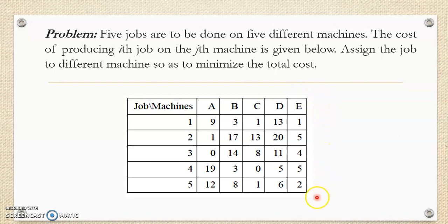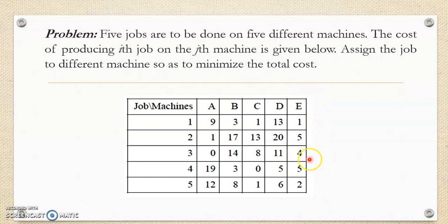Let me revise the various steps involved in the Hungarian assignment method: row operation, column operation, making assignments, check for optimality. If the solution is optimum, give the answer. If the solution is non-optimal, improve it by drawing the minimum number of lines, then modify the table and again check for optimality.